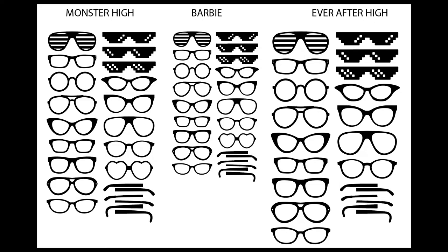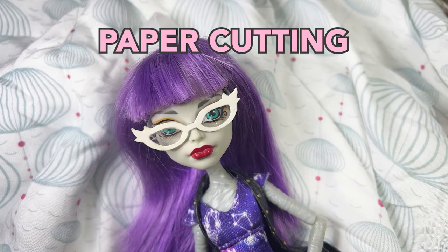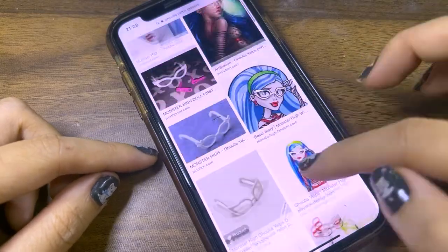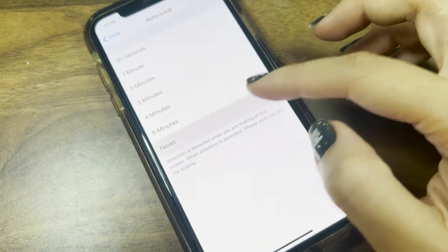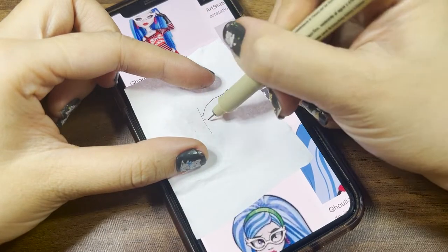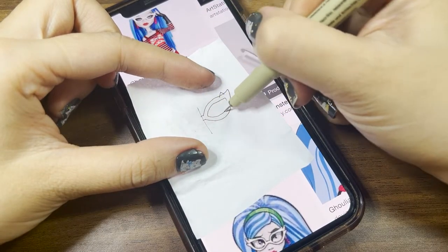First, let's make the glasses frame. If you don't have a 3D printer, you can do like this. Choose any picture of glasses you like, open the image on the phone. Then, put a piece of paper over the screen and trace with a pencil. Make sure two sides are even.